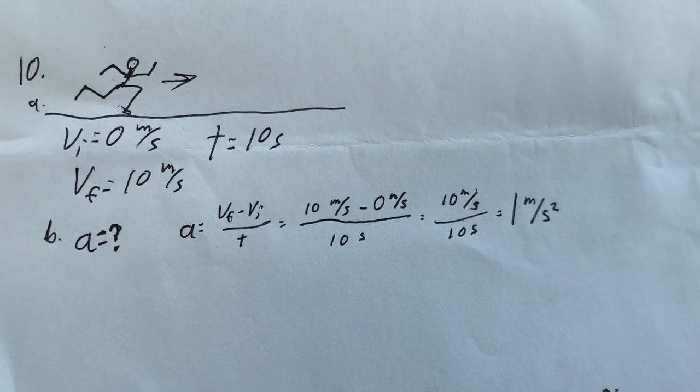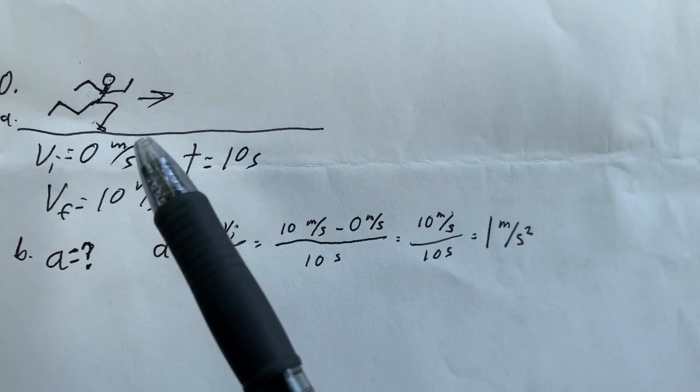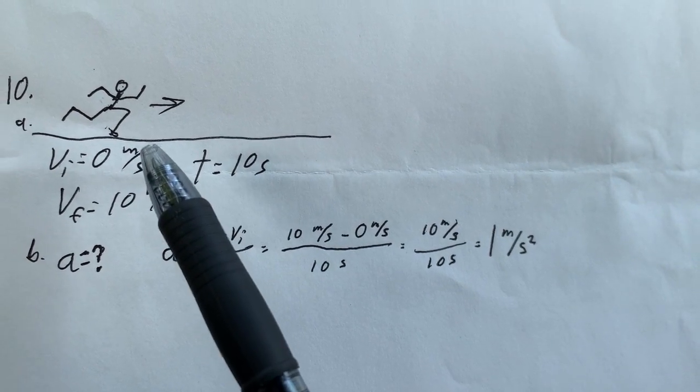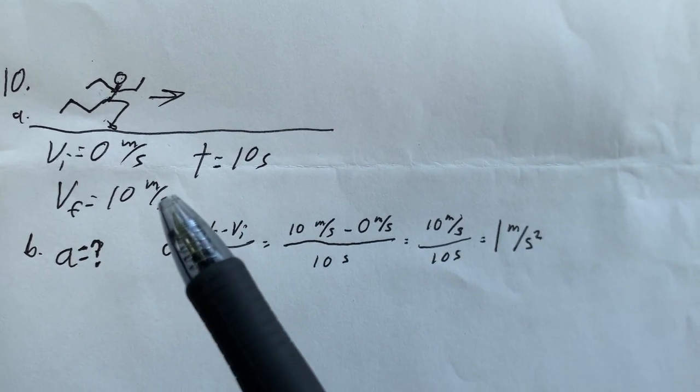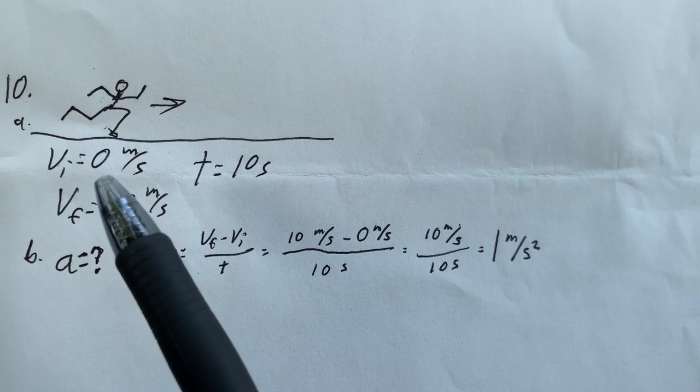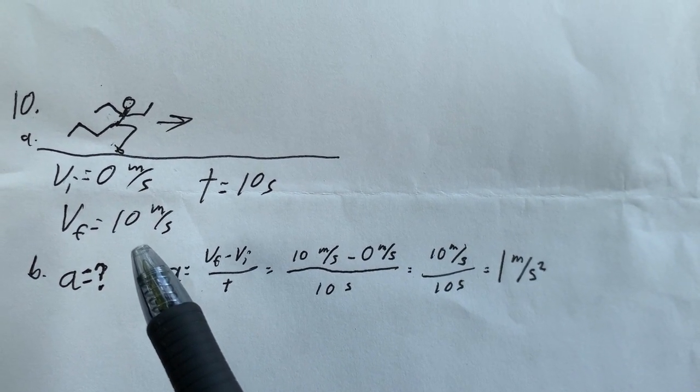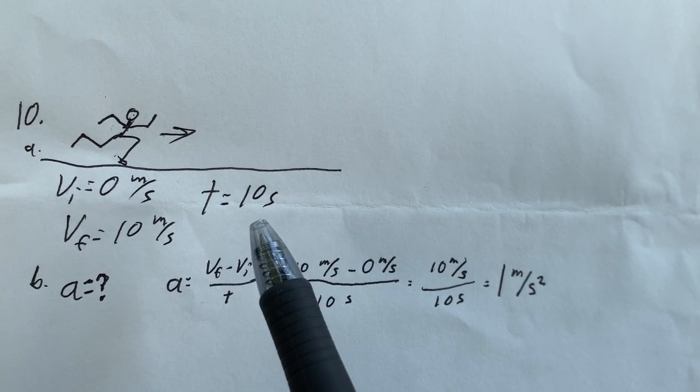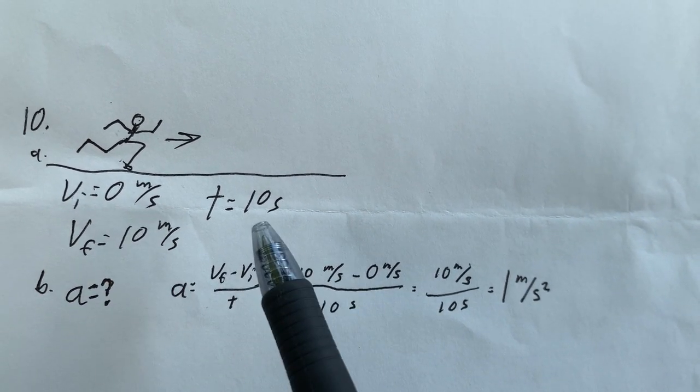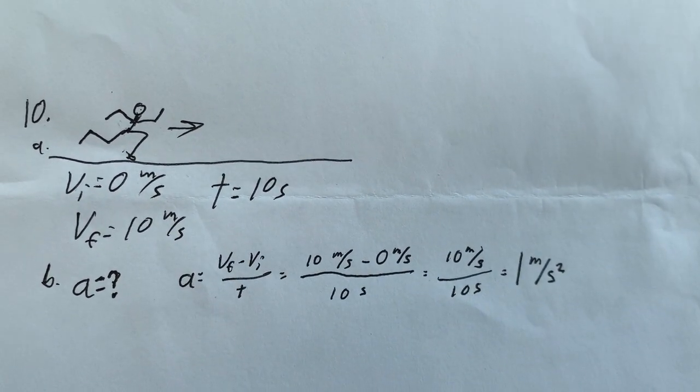Okay, number 10. Yeah, that's my crappy picture of a person running. Don't want to hear it. Starts from rest, zero meters per second. Final velocity is 10 meters per second. And they get to that final velocity after 10 seconds. All of that's given information.